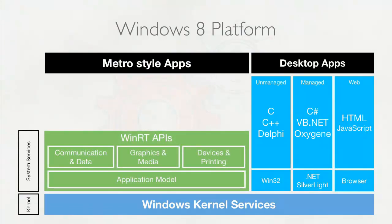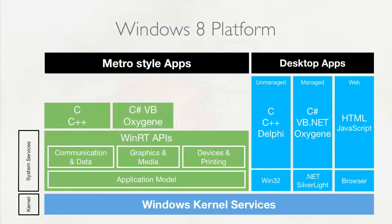The new type of development is Metro style apps. The key difference is they all use the same APIs. The Windows Runtime — WinRT APIs — is consistent across all Metro applications. These WinRT APIs replace Win32, .NET, Silverlight, and the browser. You have unmanaged applications written in C or C++, managed applications in C#, VB, or Oxygen, and JavaScript applications. All three are available for developing Metro applications and all three use the WinRT APIs.